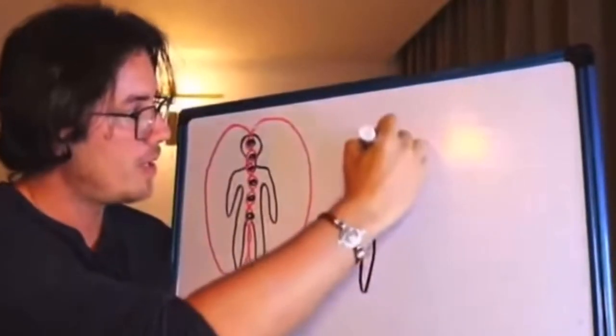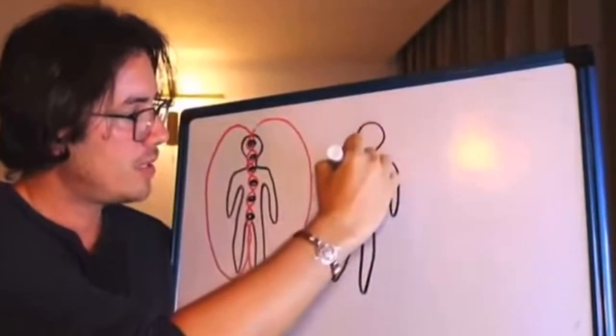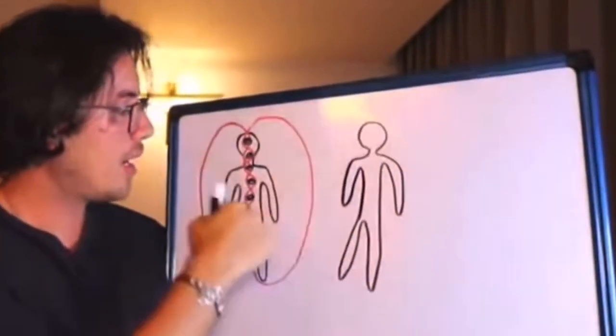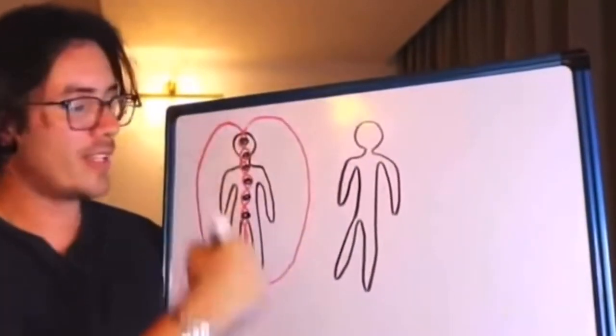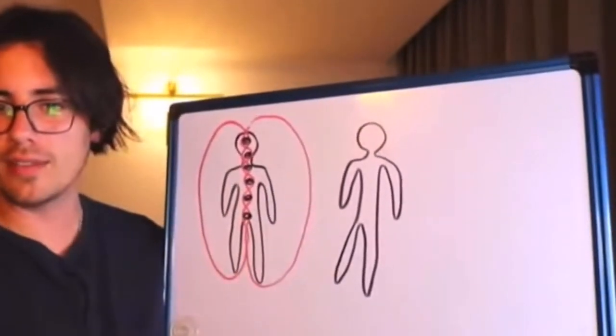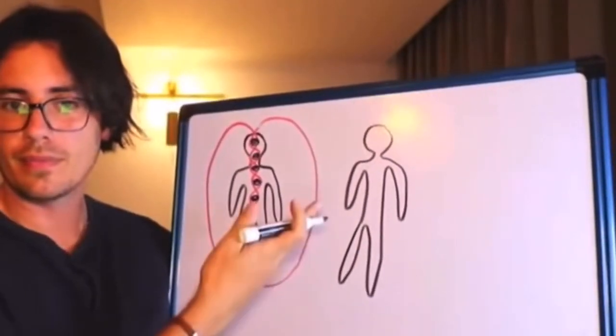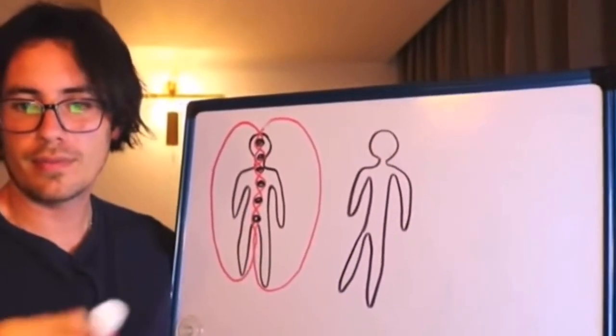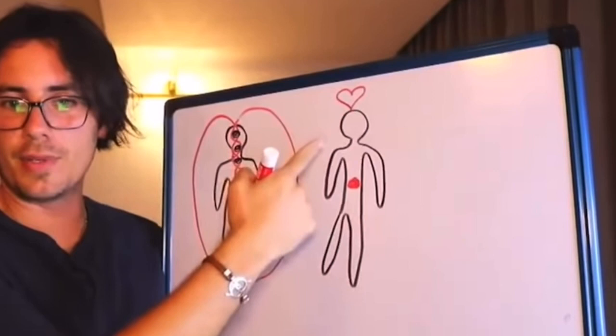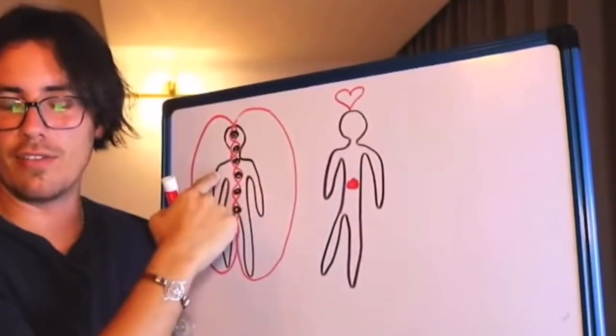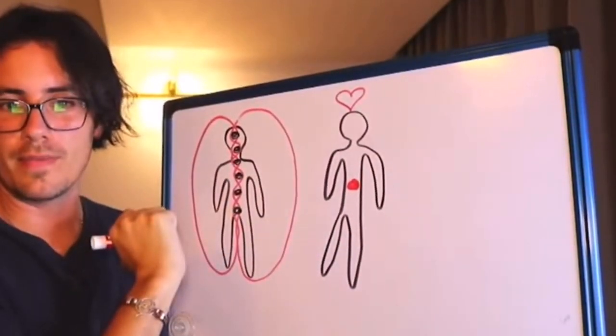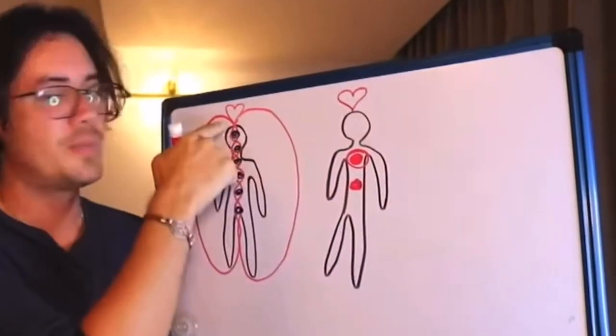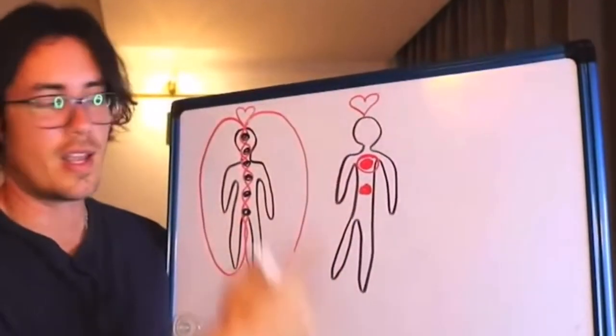So what happens when this little person has its chakras and is trying to connect, but suddenly this other tiny person appears around? And this person starts to get in love with this person. So this person also gets in love and activates this chakra.